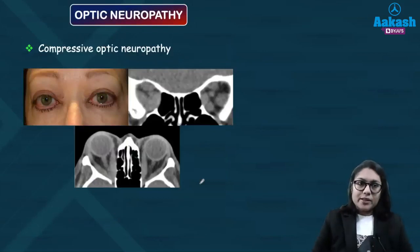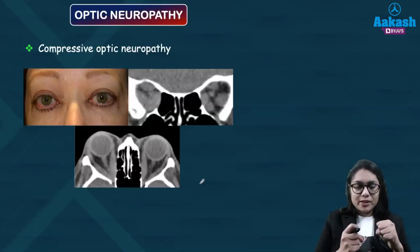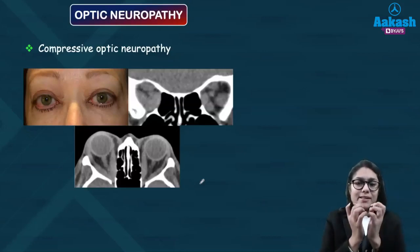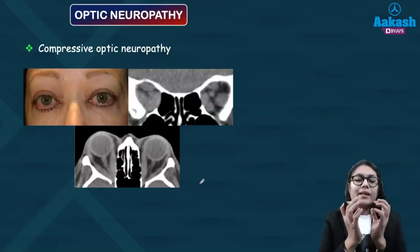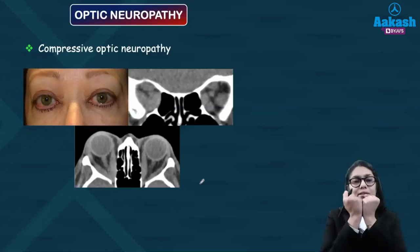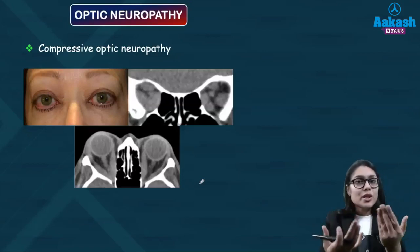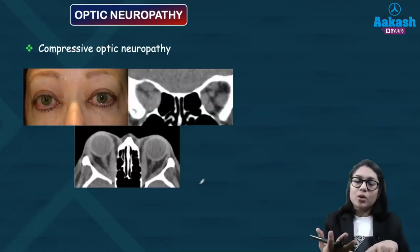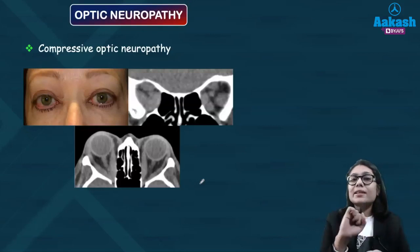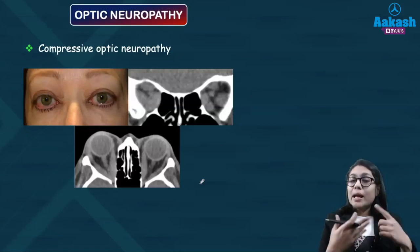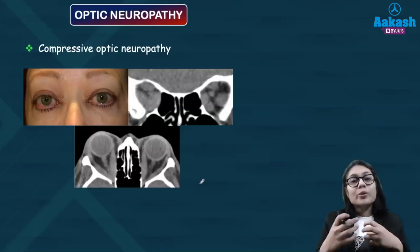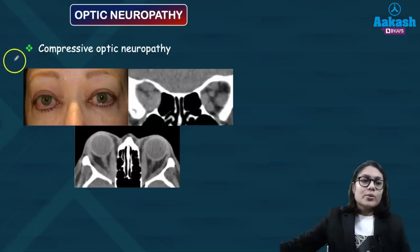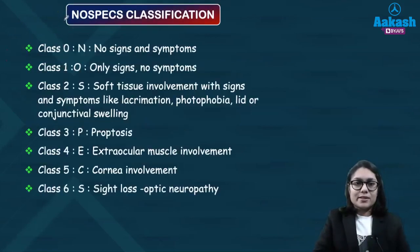Optic neuropathy in thyroid eye disease is a compressive type. Due to severe inflammation and edema during the congestive phase, intraorbital pressure becomes so high that it compresses the optic nerve, leading to defective vision and loss. The patient will present with RAPD. This is one of the important indications to decompress the eye, as the optic nerve is getting involved — particularly during the acute phases.